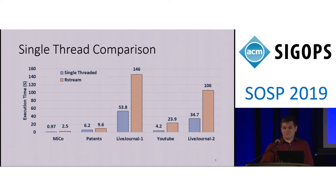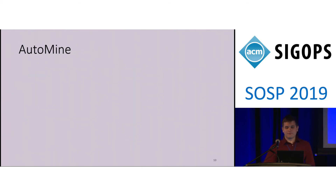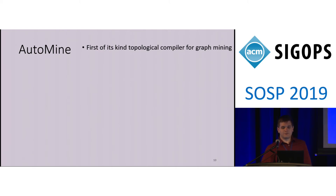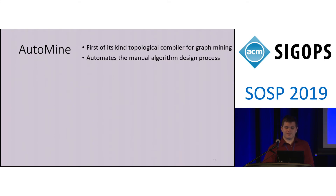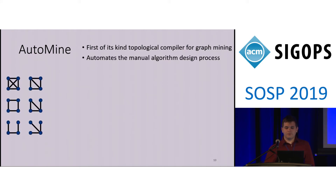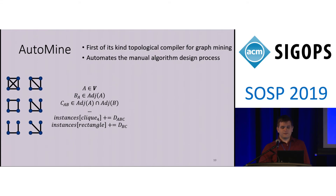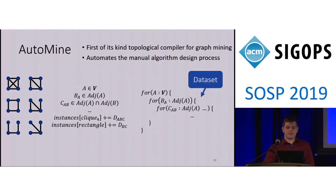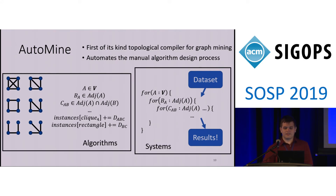If you're ready to see something cool, I'd like to introduce AutoMine, a compiler for graph mining that harmonizes the generality of a high-level abstraction with the performance of low-level tuning. The only inputs it needs are the structural patterns you're actually looking for, and it works through the whole process from algorithm design to implementation of code that can work directly on your dataset and give you the result. There are interesting challenges both on the algorithm side and the system side, and we'll take a look at the algorithms first.